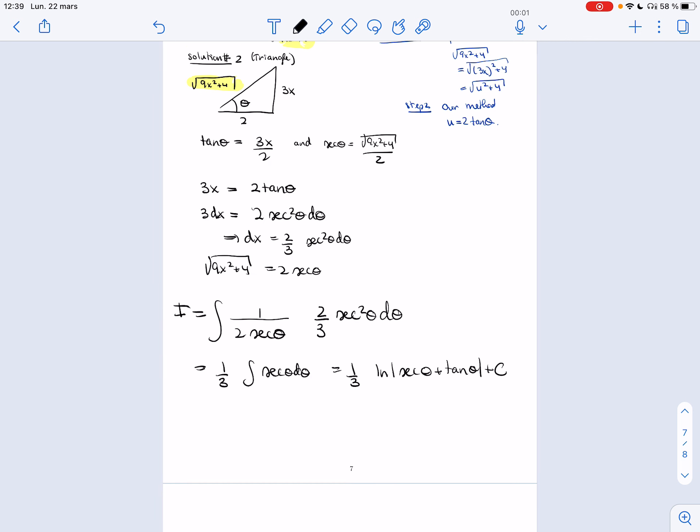It's secant plus tan inside a log. All right, and now I'm going to use the triangle to get the secant and the tan back. Actually, I have them here, but you can read them from the triangle too. I actually spelled it out. So secant is 9x plus 4 square root divided by 2. Tan is 3x on 2 plus c.